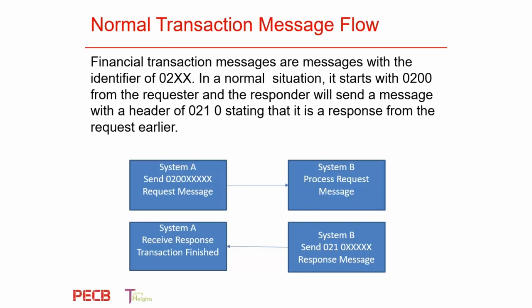The message type is a four-digit numeric field that describes each message class and its function. Looking at the normal transaction message flow, you can see the arrow going from system A: send request, process the request, and response message. Receive response — transaction is finished. It must follow through with the nomenclature, the naming convention, and the way the numbers and messages are defined.